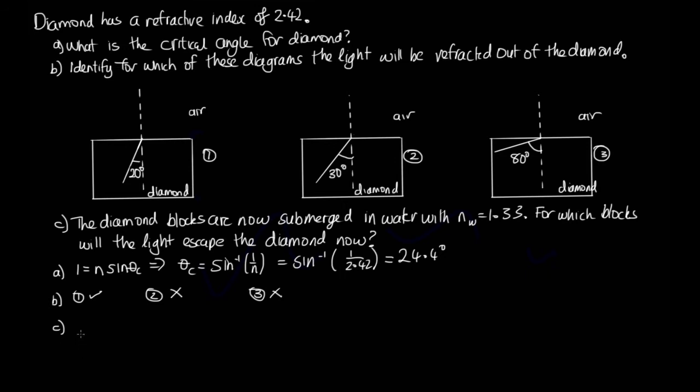Okay, now part C says that we now submerge these blocks in water, which has a refractive index of 1.33. So the refractive index for air was equal to 1.00. So we've now got a bigger refractive index outside. So now we're asked from which of the blocks will the light escape. Okay, so we'll need to go back to look at how we came up with this critical angle.